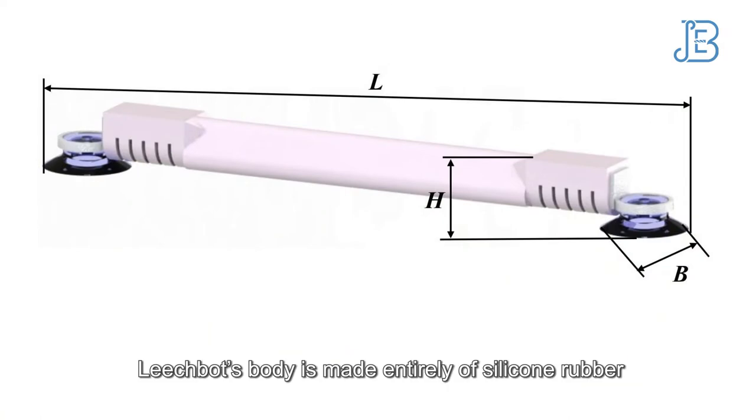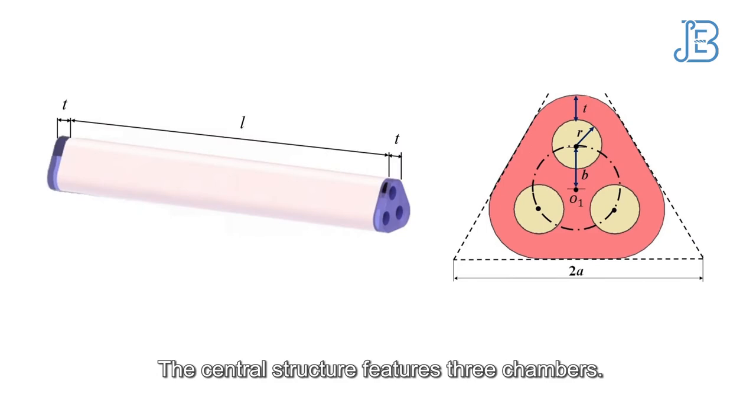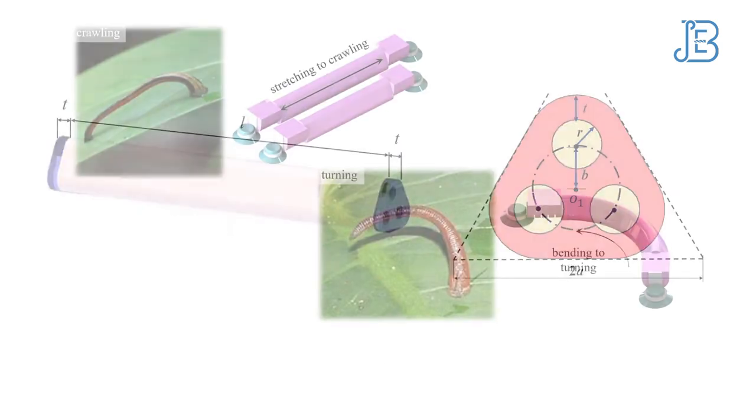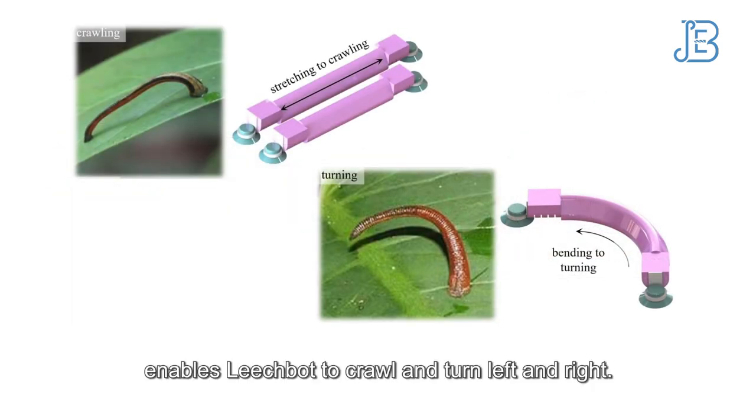LeechBot's body is made entirely of silicone rubber and is built in three parts. The central structure features three chambers. Varying the pressure in these chambers enables LeechBot to crawl and turn left and right.